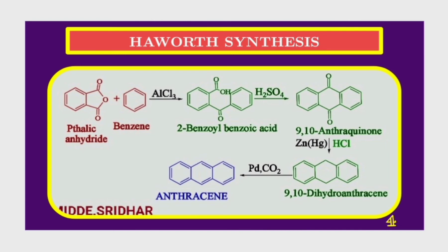In the third step, 9,10-anthraquinone is subjected to Clemmensen reduction and 9,10-dihydroanthracene is obtained. In the fourth step, 9,10-dihydroanthracene is subjected to dehydrogenation with palladium catalyst in the presence of carbon dioxide gas and anthracene is obtained.